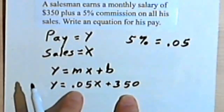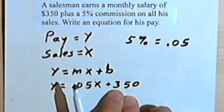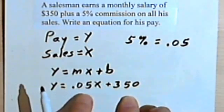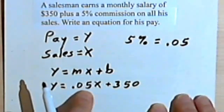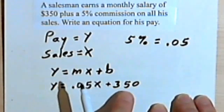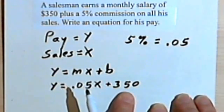So this will be our final equation: y equals 0.05x plus 350. Or his pay equals 5% of his sales plus $350 basic salary.